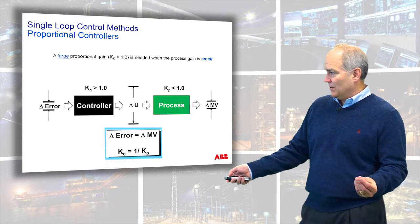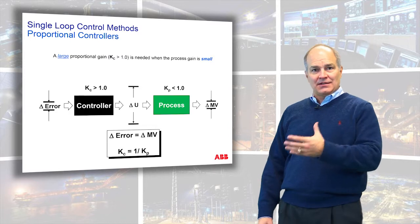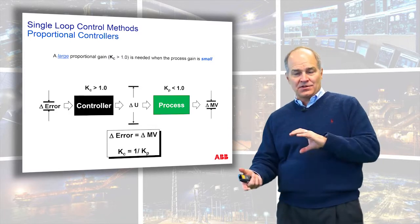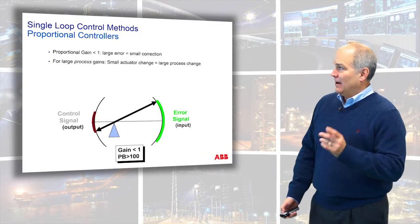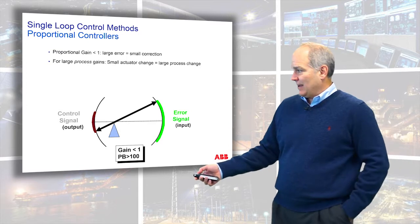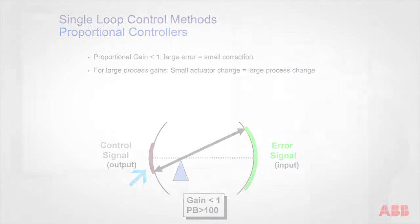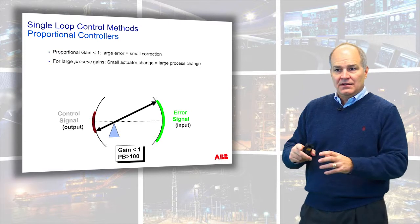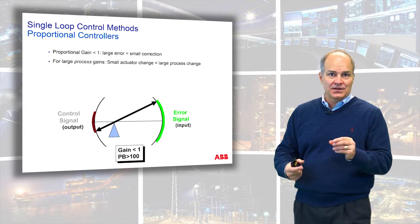A large proportional gain aligns with a small process gain — the controller gain and process gain are inversely proportional, and you'll see that in the tuning rules. On the other side, a proportional gain less than one means you have a large error but don't need a very large output change — like a fire hydrant, where just a small change has a huge impact. If you have a really strong actuator, you don't need to move it very much to get a big change.